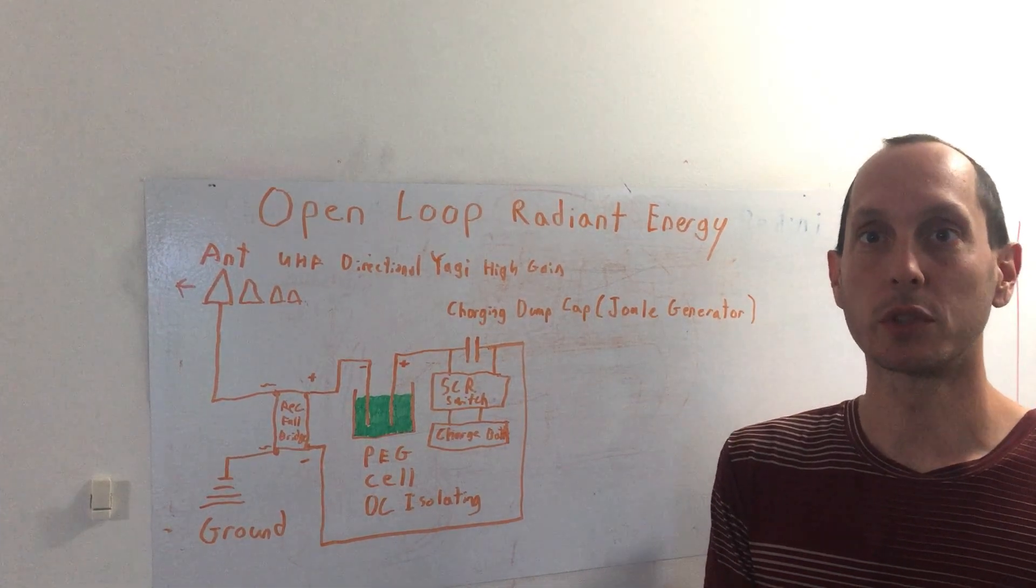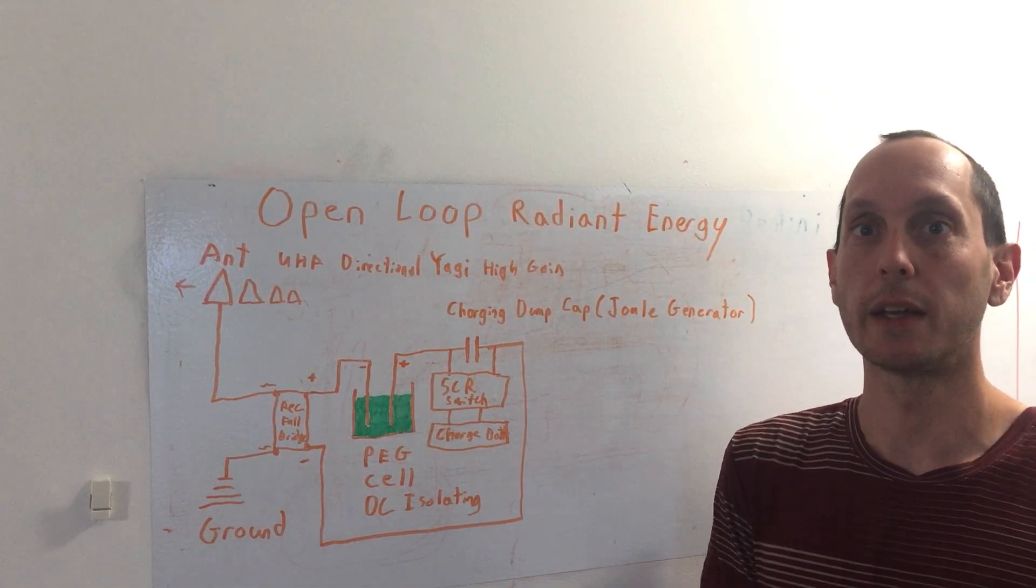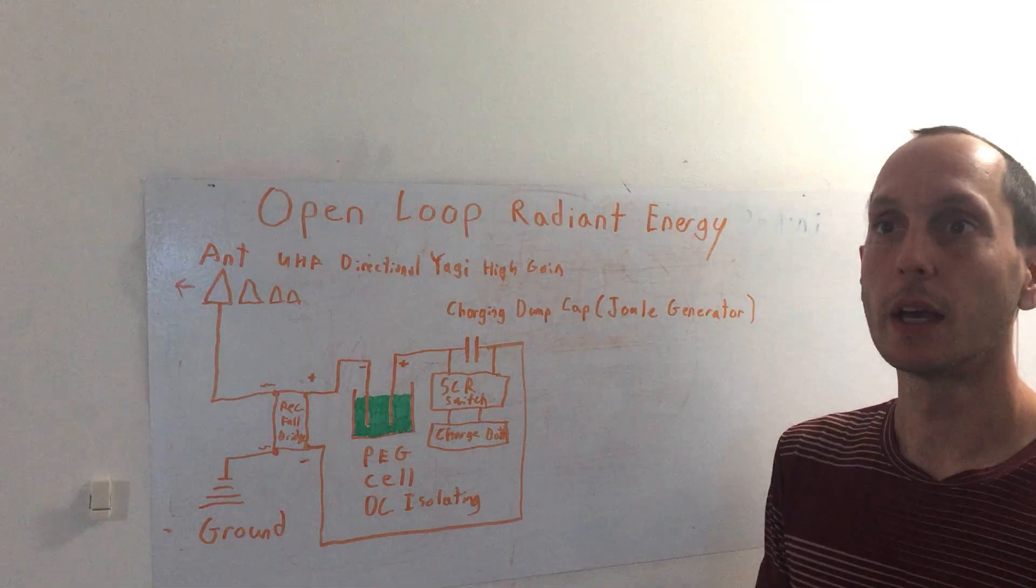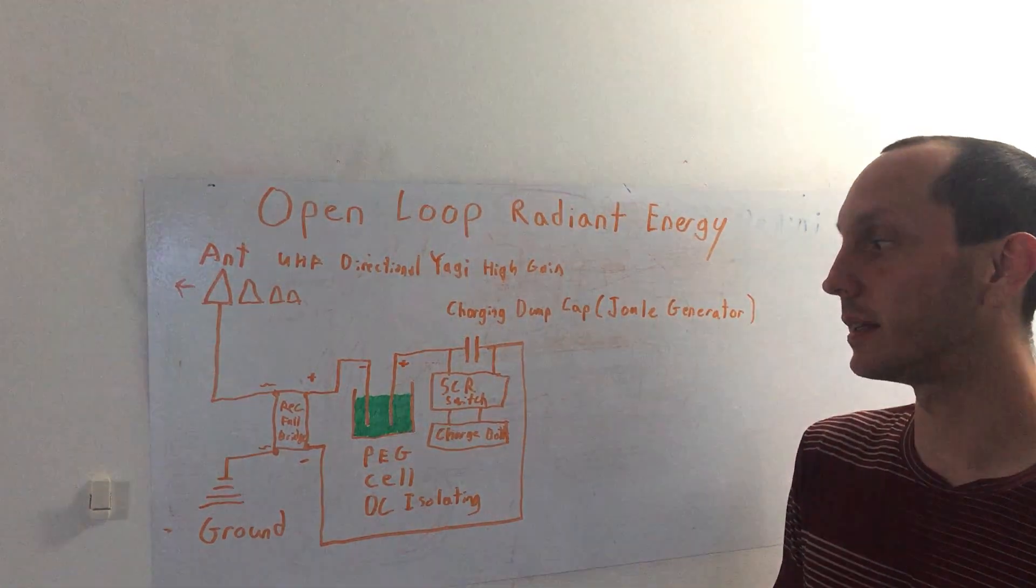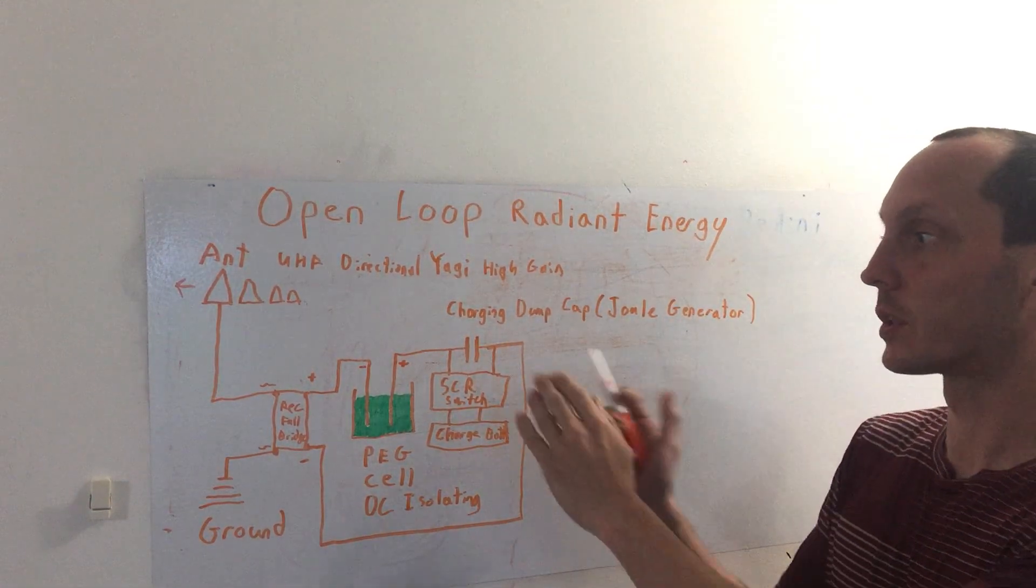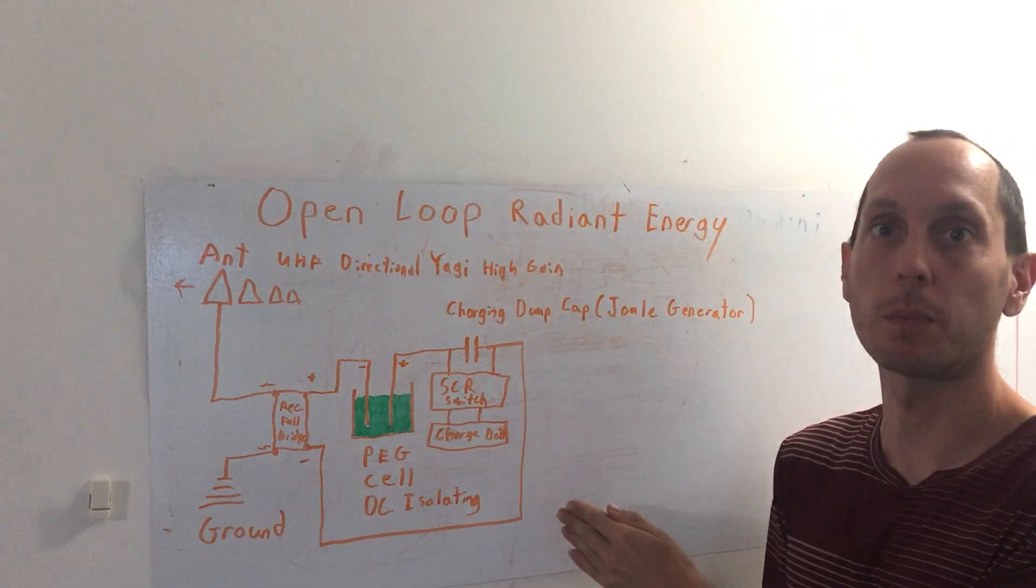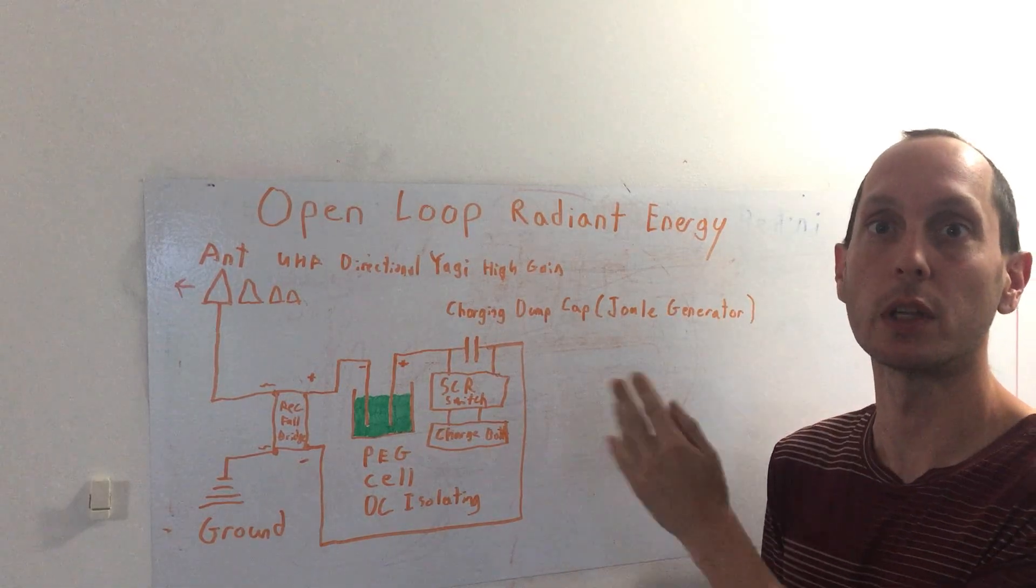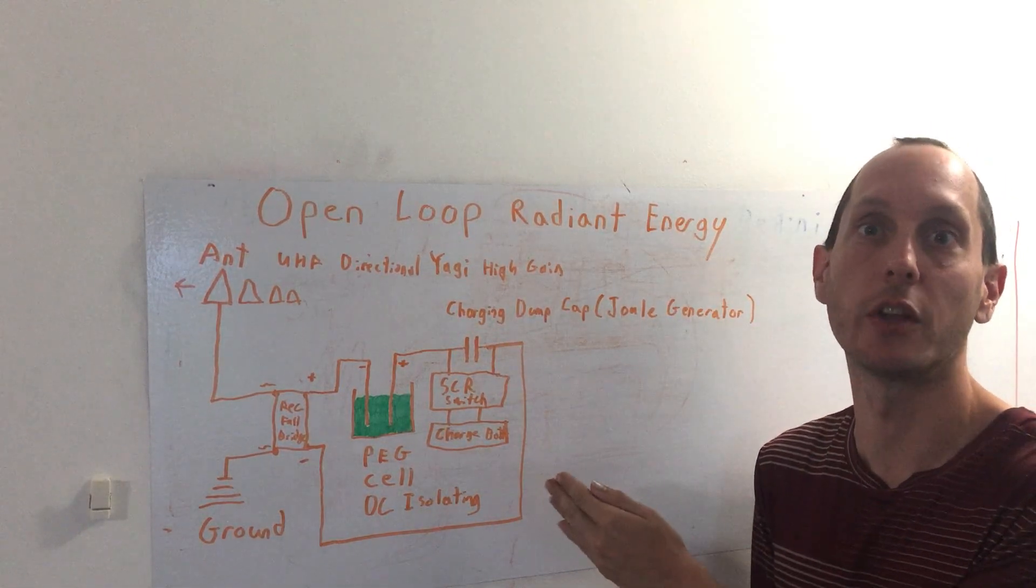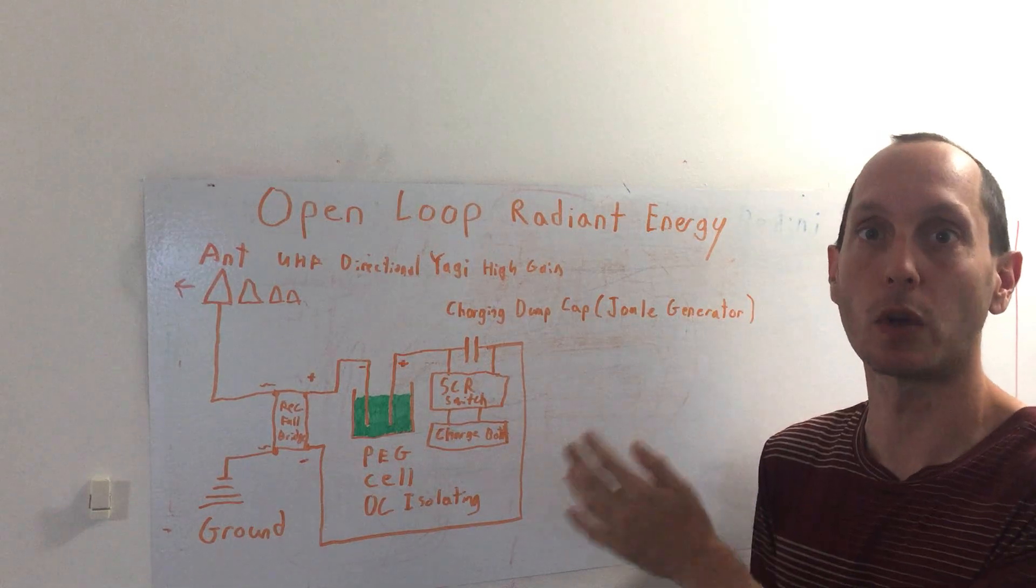Good day folks, I'd like to show you some circuits here that we can use and ideas for the PEG power cell as a DC circuit block, essentially keeping the dipole open. If you don't know what I'm talking about, please refer to the earlier videos with the full explanation. I'll have the link in the descriptions for that.